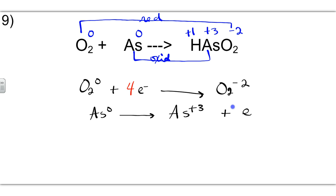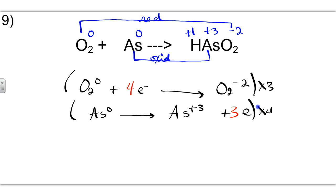From 0 to plus 3, that's a difference of 3 electrons. We add electrons to the right side because a plus 3 oxidation state is higher than 0. Now we have to balance the number of electrons. Here we're going to multiply times 3, and here we're going to multiply times 4. And now my electrons are both balanced.